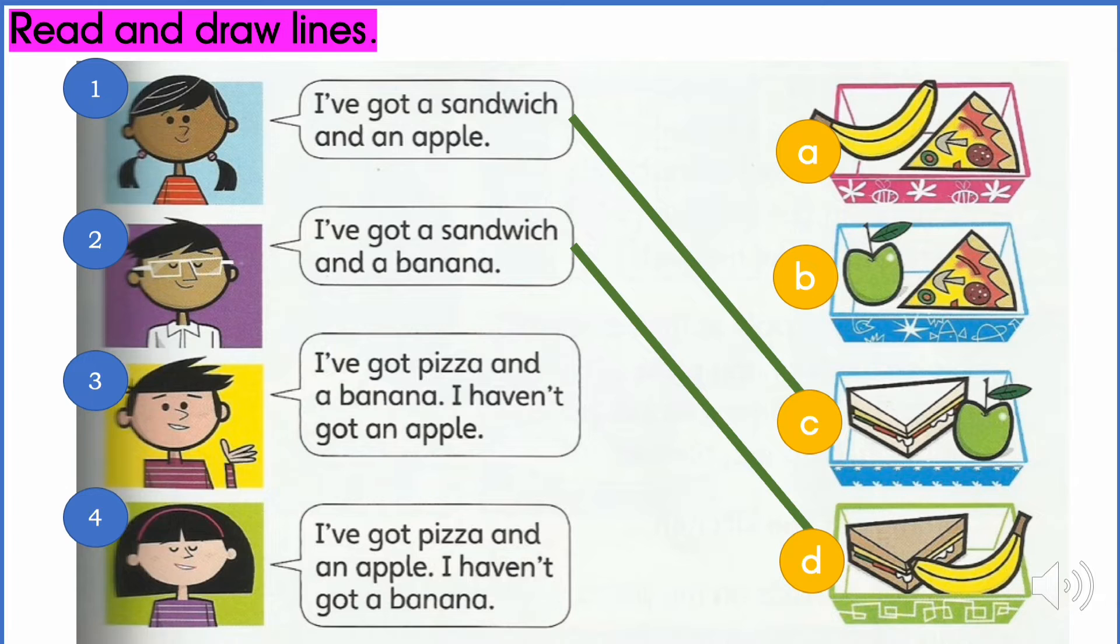Let's go to question three. I've got pizza and a banana. I haven't got an apple. Which is the answer? Is it A or B? That's right. It's A.